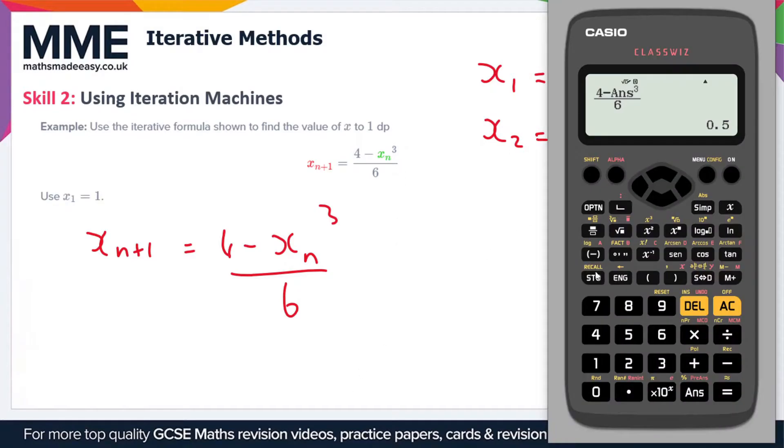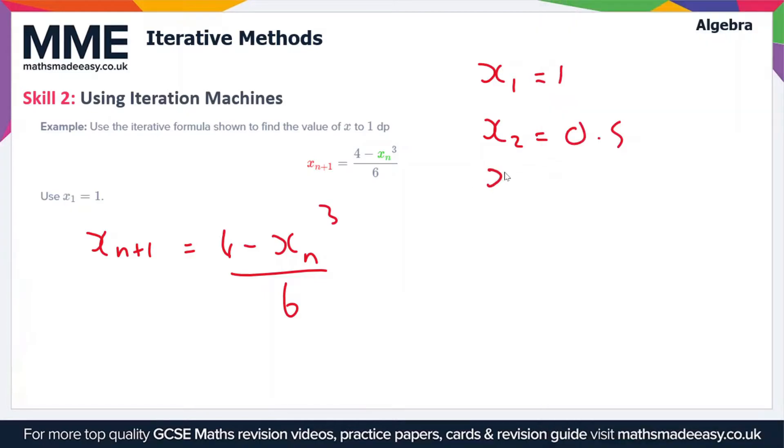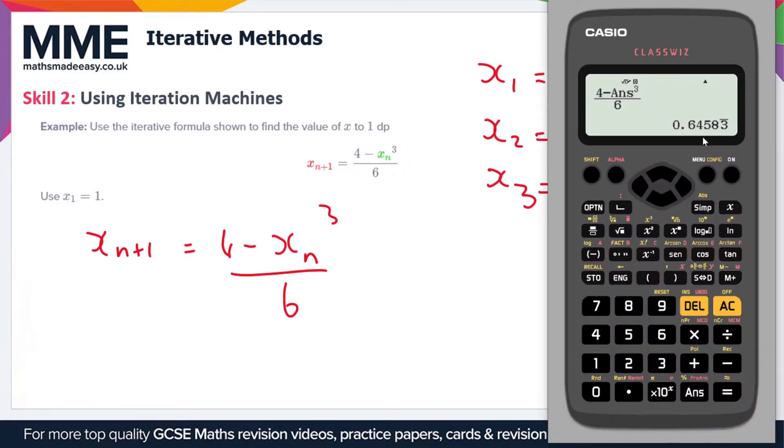All I have to do now is just keep pressing equals because the formula is stored and the answer that is stored is 0.5 here. If I press equals now it's running the same calculation but this time with a value of 0.5 and we've got a value now of x3 equals 0.6458, which just rounds to 0.65.